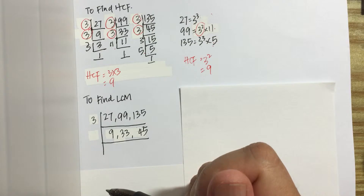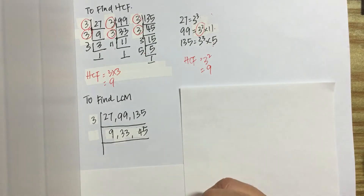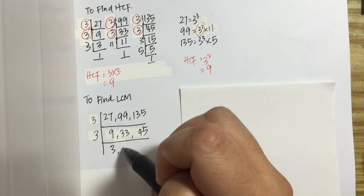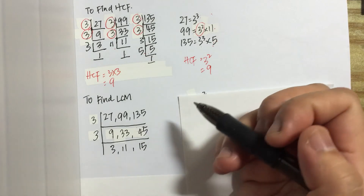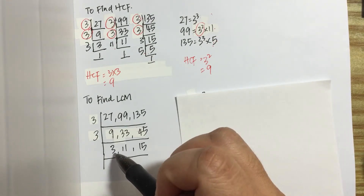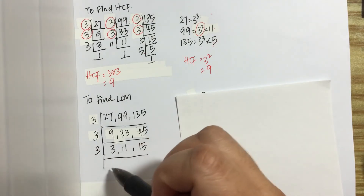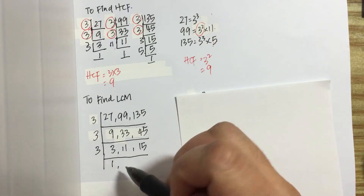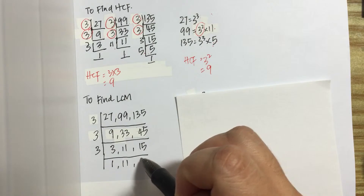We look for the smallest prime number that can divide any of these numbers again — that would be 3. Continuing: the next prime number that can be used for 3, 11, or 15 would be 3. So 3 divided by 3 gives 1. But 11 cannot be divided by 3, so we just copy it. And 15 divided by 3 gives 5.